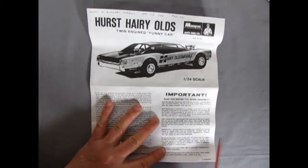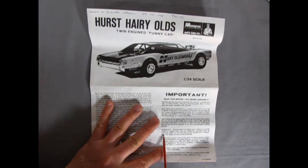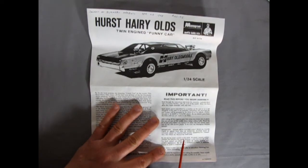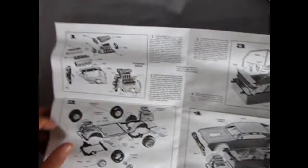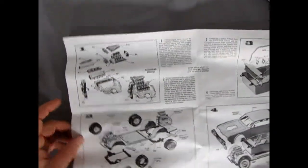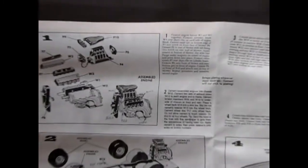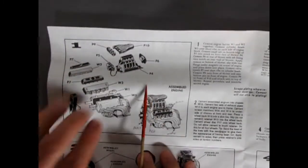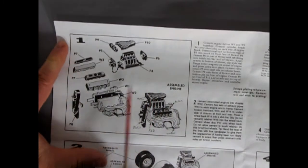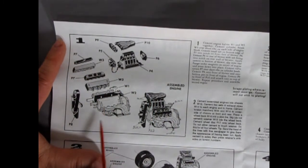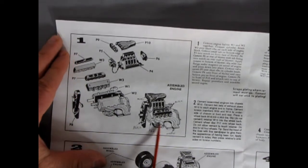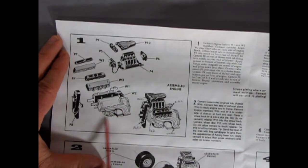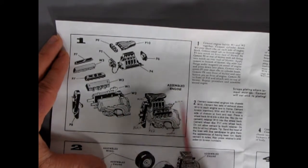Then it tells you to scrape the important part. Scrape metal plating away from all plated parts in areas that will be cemented so that your Testors glue will melt the plastic to the plastic. Everybody forgets that. Okay anyway, so let's zoom in.